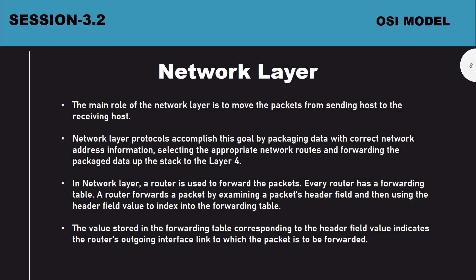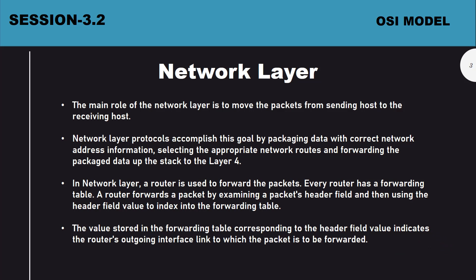The most important thing to understand about the network layer is routing. A router simply forwards the data packet from your network to another network. So if you want to communicate with a friend in a different network or a far distant area, your data packet will be sent through a router, which forwards it to the next router, and so on until it reaches your friend.